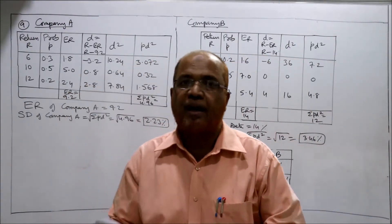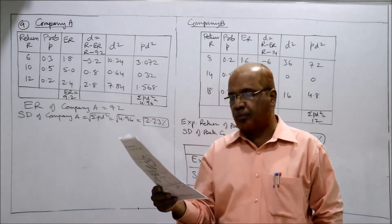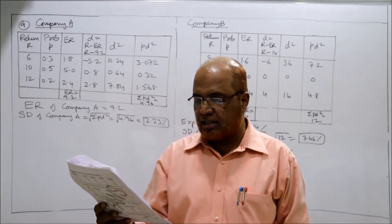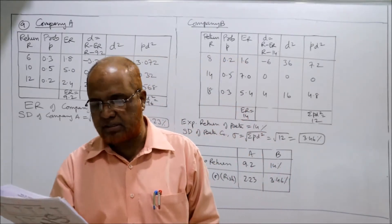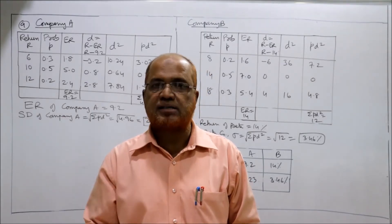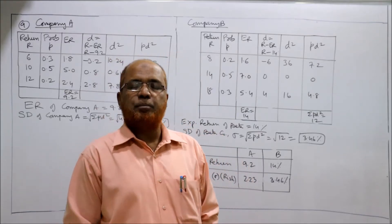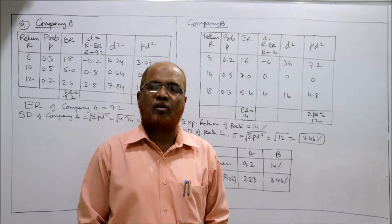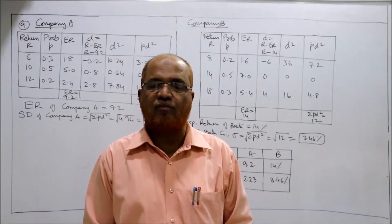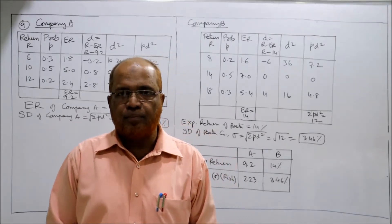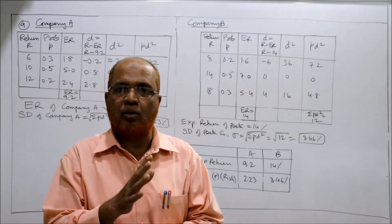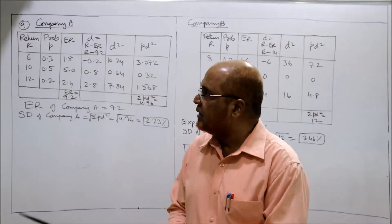Students, problem number nine — eight problems we have completed, now the ninth problem. Given the data below on two companies A and B, calculate the expected return and standard deviation as a risk measure. We are required to calculate the expected return and standard deviation, and determine which company is better for return and risk. Same as the previous problem where we compared alpha limited and beta limited, here we also have to make a comparative analysis and find out which company is better — A or B.